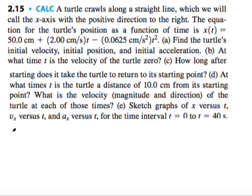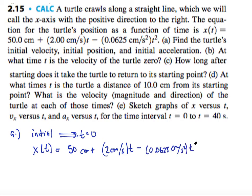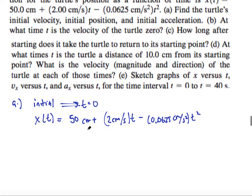So initial implies time zero. So I want to take my position function, which is 50 centimeters plus 2 centimeters per second times t minus 0.0625 centimeters per second squared times t squared. And I want to plug in a zero for all of these. So x of zero. Well, this term would vanish, this term would vanish, leaving me only 50 centimeters. So this is my initial position.